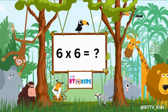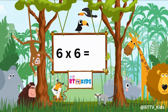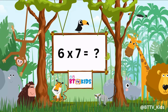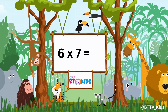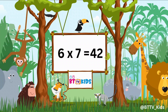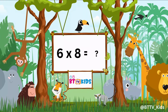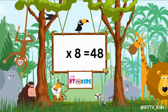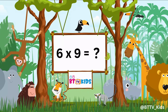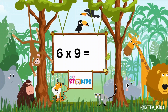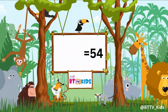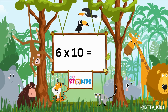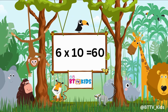Six sixes are thirty-six. Six sevens are forty-two. Six eights are forty-eight. Six nines are fifty-four. Six tens are sixty.